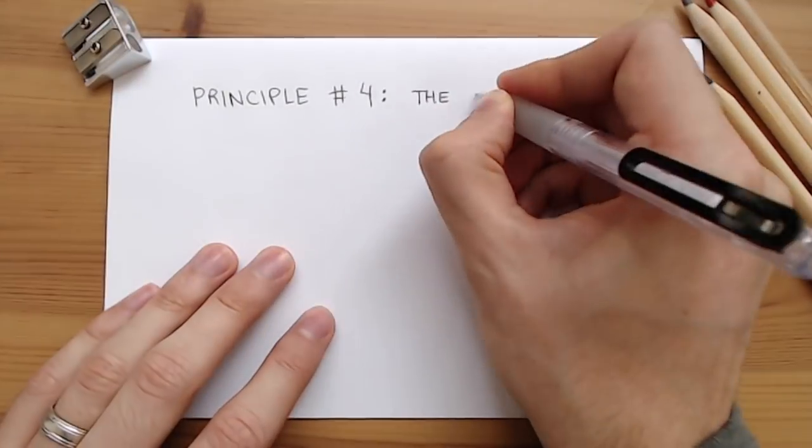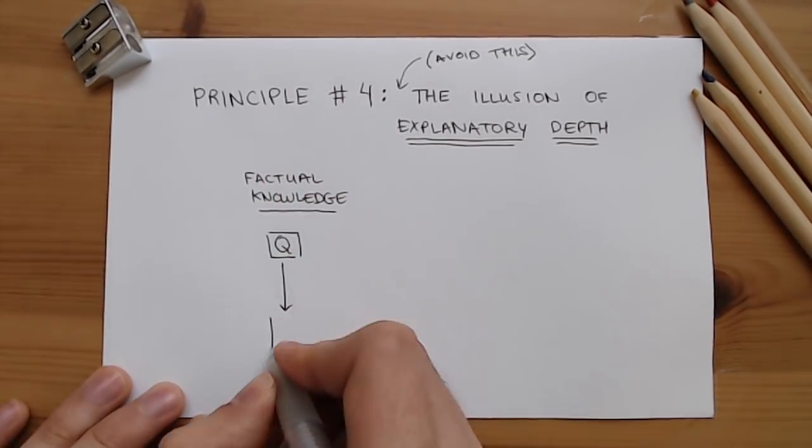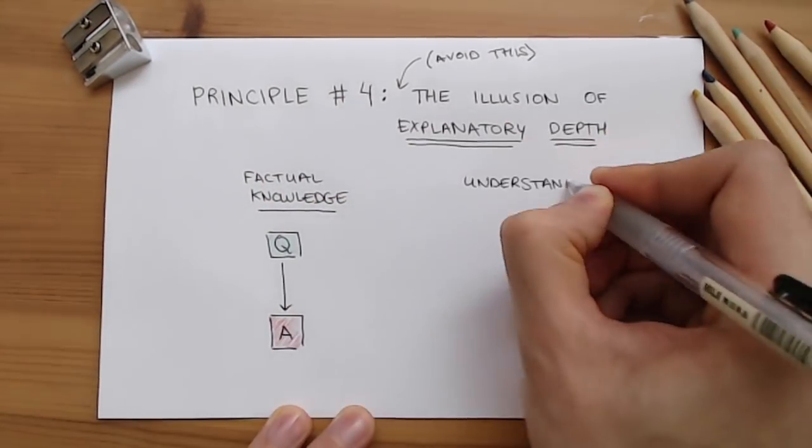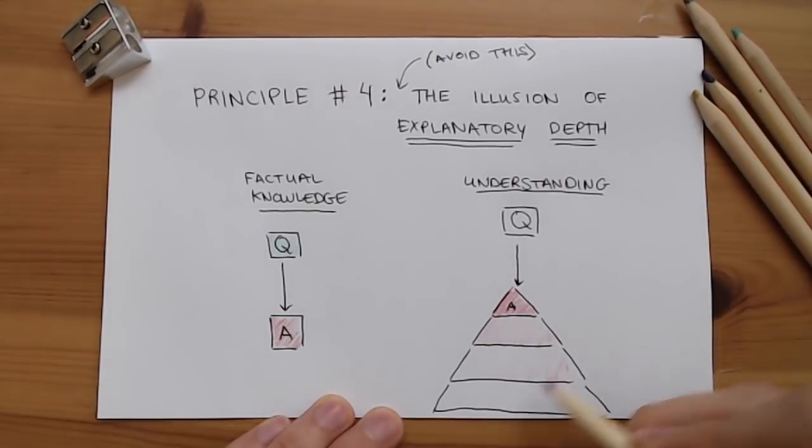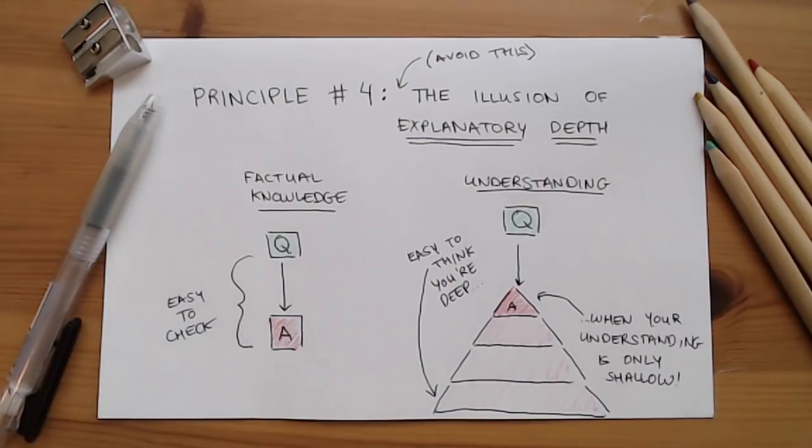Psychologists even have a name for this, the illusion of explanatory depth. The reason is that while it's easy to self-check factual knowledge, you either know it or you don't, understanding proceeds in degrees, so it's easy to convince yourself you know something when you really don't.